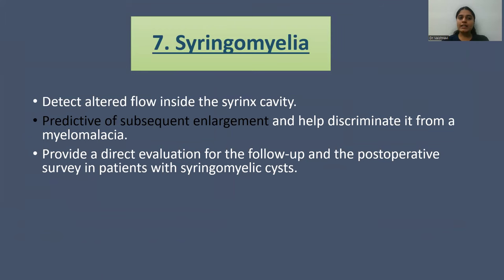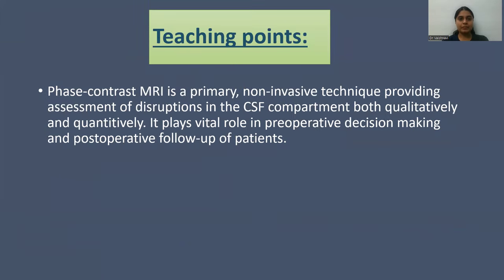In syringomyelia, CSF flow MRI detects altered flow inside the syrinx cavity. It is predictive of subsequent enlargement and helps discriminate syringomyelia from myelomalacia. It also provides direct evaluation for follow-up and post-operative survey in patients with syringomyelic cysts.